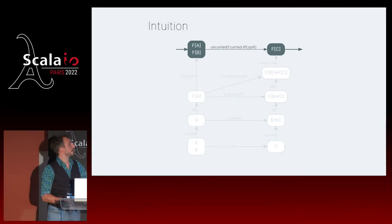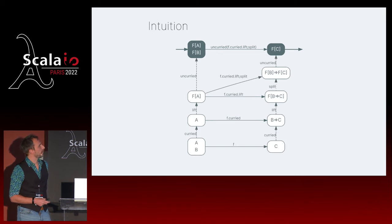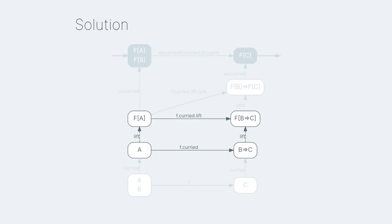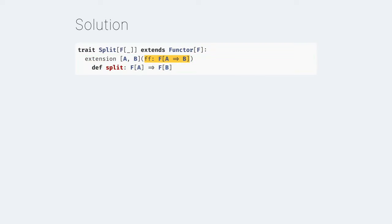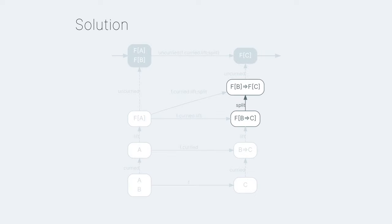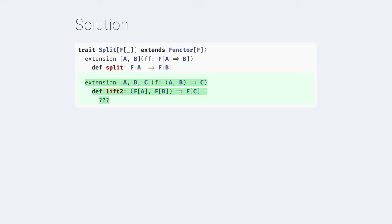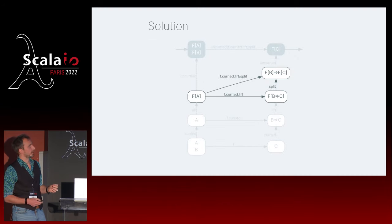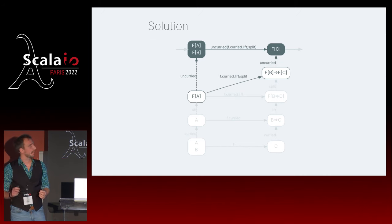We need a type class called split. First we need lift - so lift has to be a functor. Then we need the split method, which takes an F of A to B and returns an F of A to F of B. With that we have a concrete split implementation and a solution that works. We can implement lift2 by just following the diagram: first take F, curry it, and lift it; then compose it with split; and finally un-curry the whole thing, and you get your function lift2.